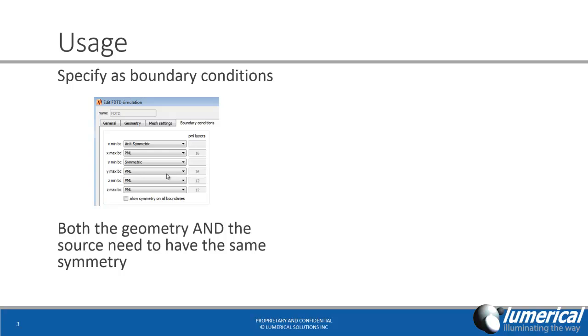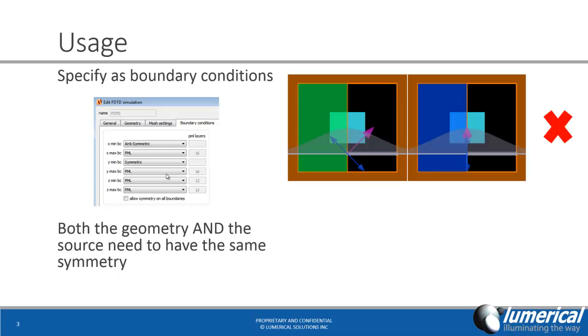One important thing to remember is that both the geometry and the source need to have the same symmetry. For example, in this figure on the right, the structure is symmetric in both the x and y dimensions, but the source is at an angle, so it's not actually symmetric in the x-direction. This means that I cannot apply symmetry for the x-boundaries.